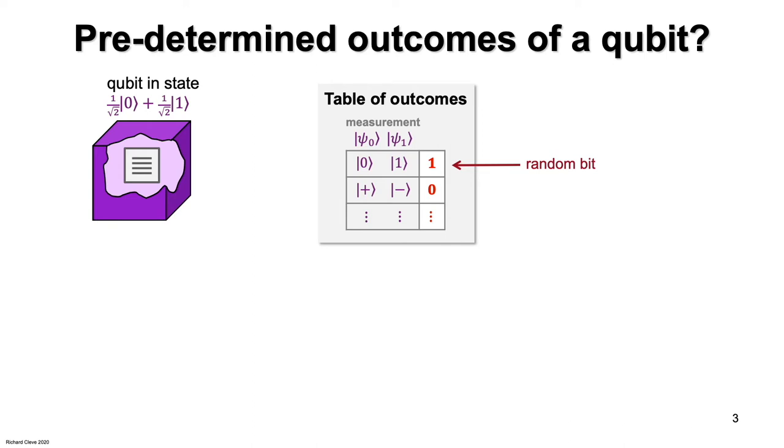On the other hand, for a measurement in the plus-minus basis, the outcome should always be the first state. So that entry of the table is filled with the bit zero.